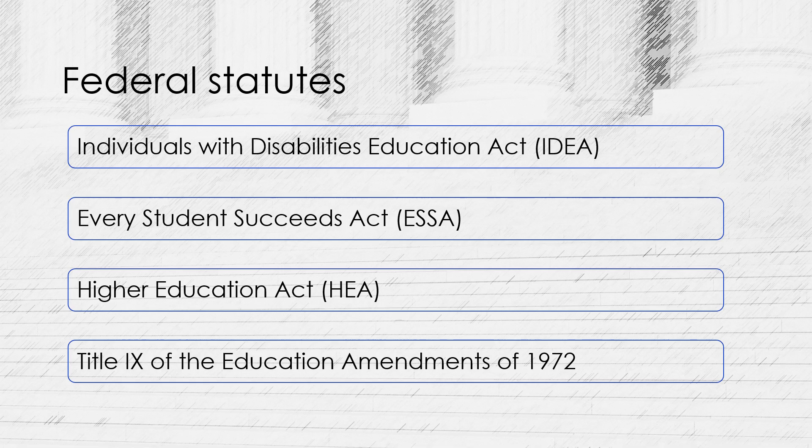The Higher Education Act, originally enacted in 1965 and reauthorized several times since then, provides funding and other support for higher education institutions and students. It provides for federal financial aid programs such as Pell grants and student loans, and sets out requirements for institutional accountability and transparency.